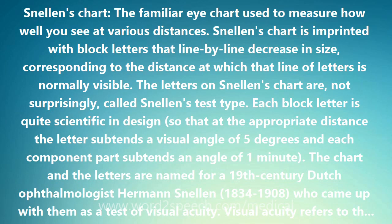The chart and the letters are named for a 19th century Dutch ophthalmologist Hermann Snellen, who came up with them as a test of visual acuity. Visual acuity refers to the clarity or clearness of the vision, a measure of how well a person sees. The word acuity comes from the Latin acuitas, meaning sharpness.